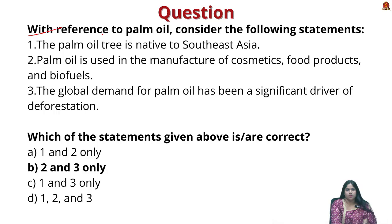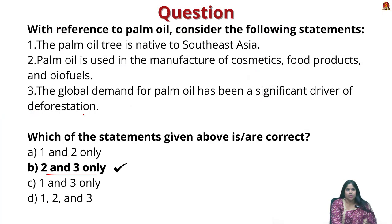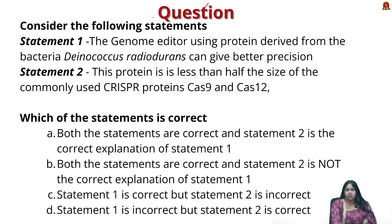Practice question on palm oil: Consider the following statements — (1) The palm oil tree is native to Southeast Asia; (2) It is used in the manufacture of cosmetics, food products, and biofuels; (3) The global demand for palm oil has been a significant driver of deforestation. The correct answer is statements two and three. Statement one is wrong — the palm oil tree is actually native to West Africa.